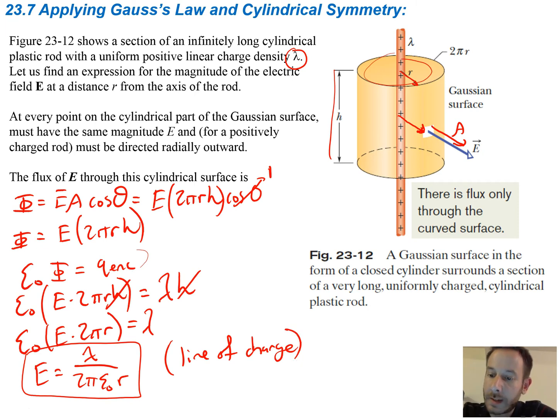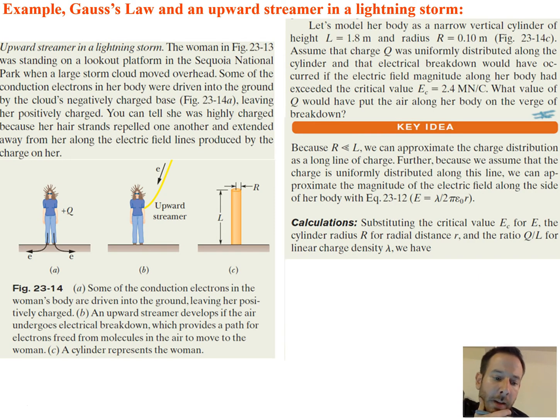A very long line of charge, like an infinitely long line of charge. Let's do an example problem. An upward streamer in a lightning storm. The woman in the figure was standing on a lookout platform in the Sequoia National Park when a large storm cloud moved overhead. Some of the conduction electrons in her body were driven into the ground by the cloud's negatively charged base, leaving her positively charged. You can tell she was highly charged because her hair strands repelled one another and extended away from her along the electric field lines produced by the charge on her.